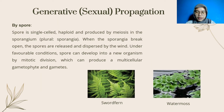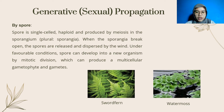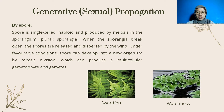The second type is propagation by spore. A spore is a single cell produced by meiosis in the sporangium. When the sporangia break open, the spores are released and dispersed by the wind. Under favorable conditions, spores can develop into a new organism by mitotic division, which can produce a multicellular gametophyte and gametes.